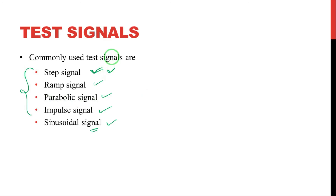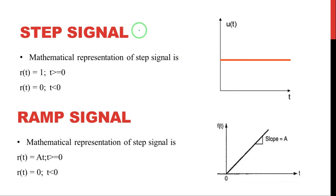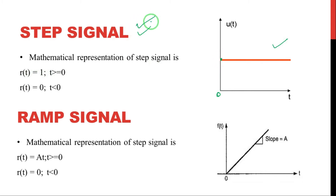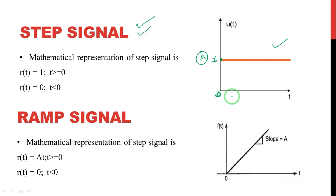The first test signal is the step signal, which is like a DC input. The mathematical representation is r(t) = A for t ≥ 0, and r(t) = 0 for t < 0. Looking at the graph on the right side, at time t = 0 it attains its final value of 1 (for a unit step signal) and maintains that same input value for all t greater than zero.